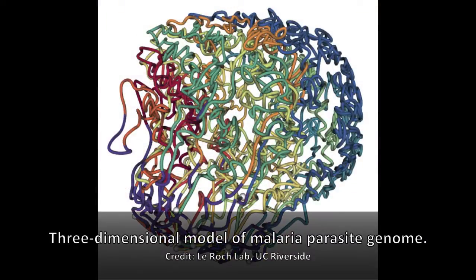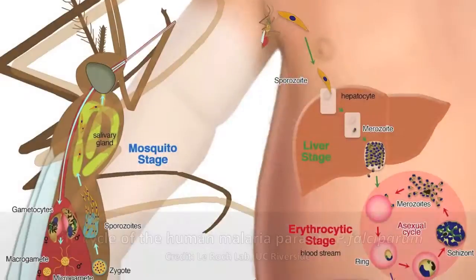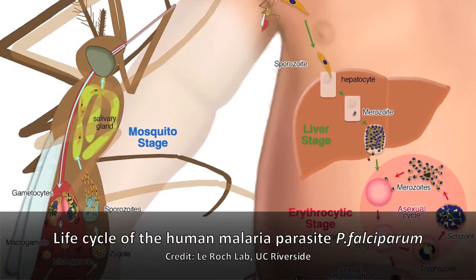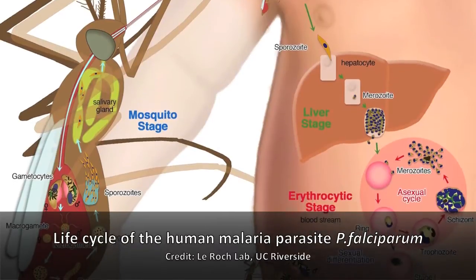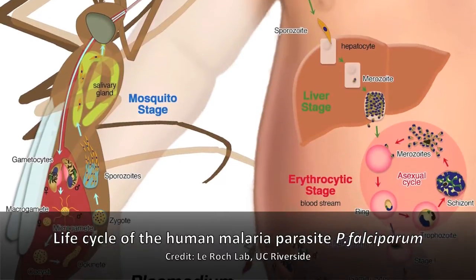My name is Karine Lerocque. I'm an associate professor at the University of California, Riverside, and my team, in collaboration with computational scientists, has discovered the three-dimensional structure of the malaria parasite genome inside the nucleus of the parasites, at different time points of the parasite life cycle.